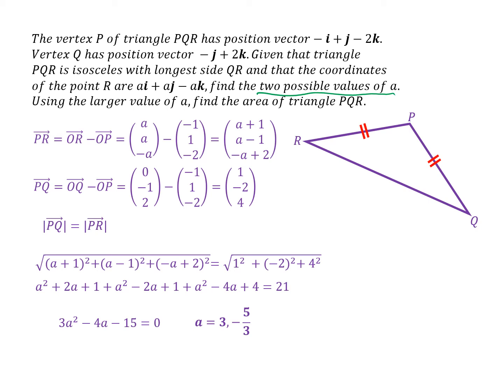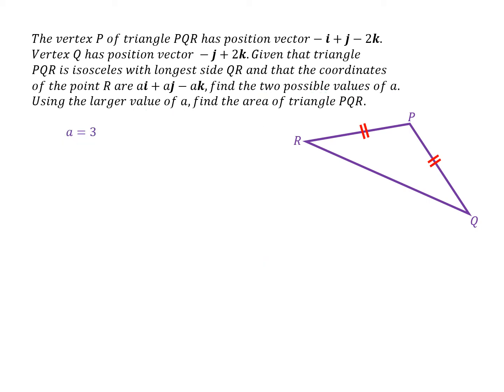So the second part of the question is asking us to use the larger value of A and find the area of the triangle PQR. So the larger value of A is three. So area of the triangle, I'm going to use half AB sine C.